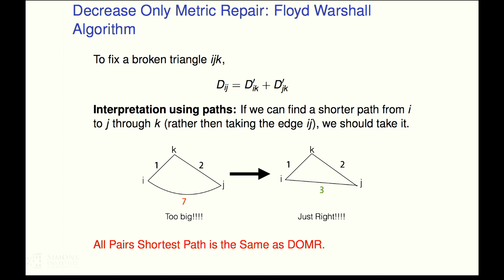What time is it? I'll let you think for a second why all pairs shortest paths should be the right thing to do. Look, when I go to fix seven, it's too big. The best thing I should do is use the shortest path between I and J, and that's three.